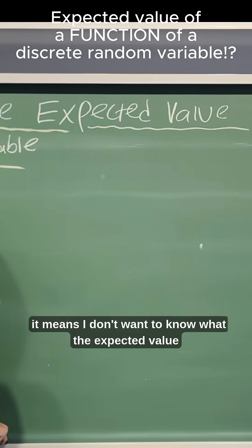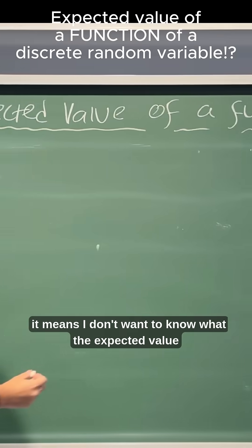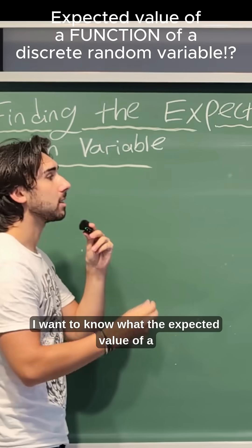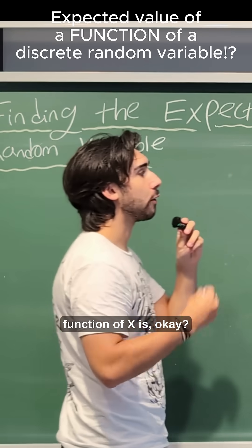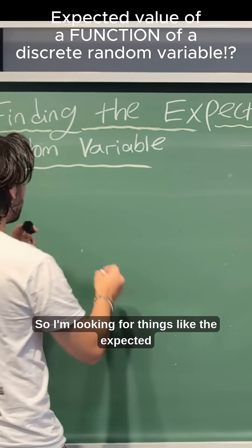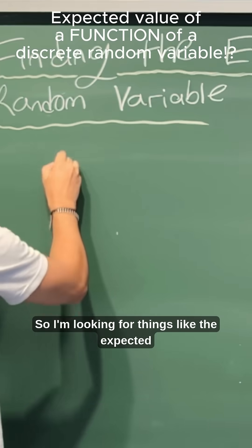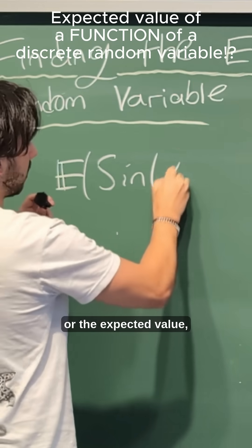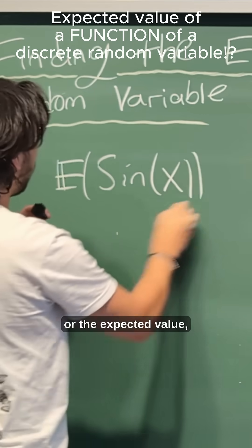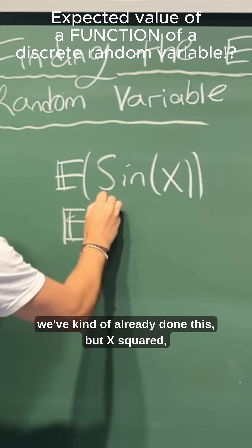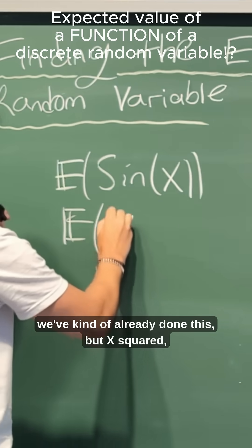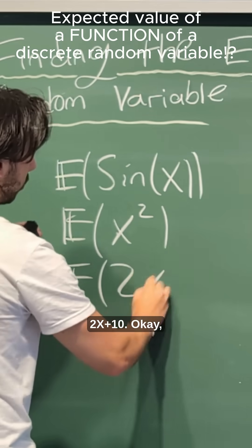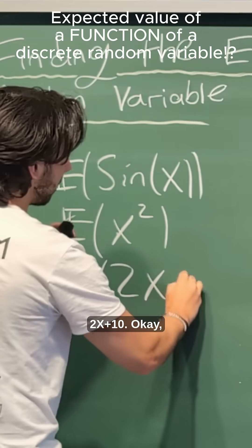It means I don't want to know what the expected value of just X is — I want to know what the expected value of a function of X is. So I'm looking for things like the expected value of sin(x), or the expected value of x squared, or the expected value of 2x plus 10.